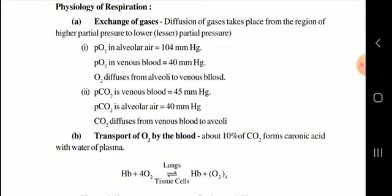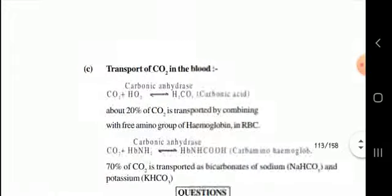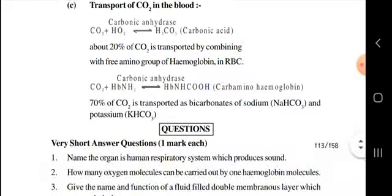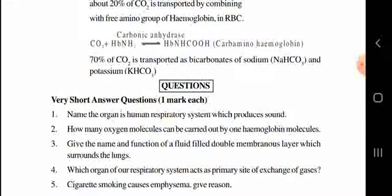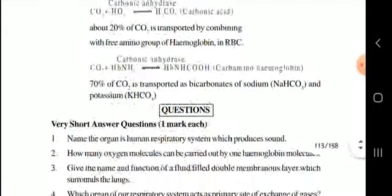Transport of O2 by blood: hemoglobin (Hb) combines with O2 from the lungs to form oxyhemoglobin (HbO2), and deoxygenated hemoglobin is formed at tissue cells. Transport of CO2: CO2 combines with water to form carbonic acid (H2CO3). About 20 percent of CO2 is transported by combining with the amino group of hemoglobin in RBCs, and 70 percent is transported as bicarbonate of sodium.